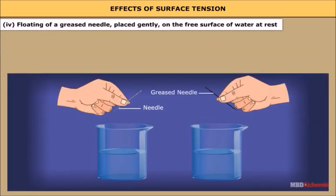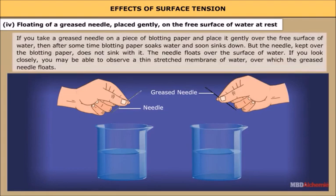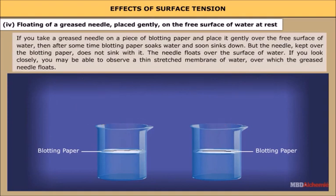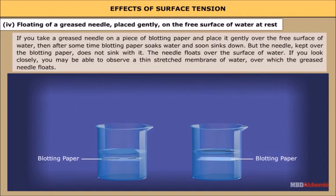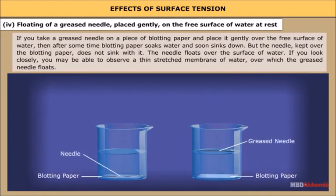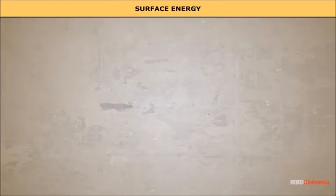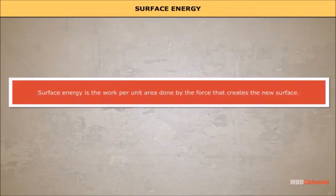Number four: floating of a greased needle placed gently on the free surface of water. If you place a greased needle on a piece of blotting paper and set it gently over the water surface, after some time the blotting paper soaks water and sinks, but the needle placed on top does not sink with it. The needle floats over the surface of water, supported by a thin stretched membrane of water observable beneath it.